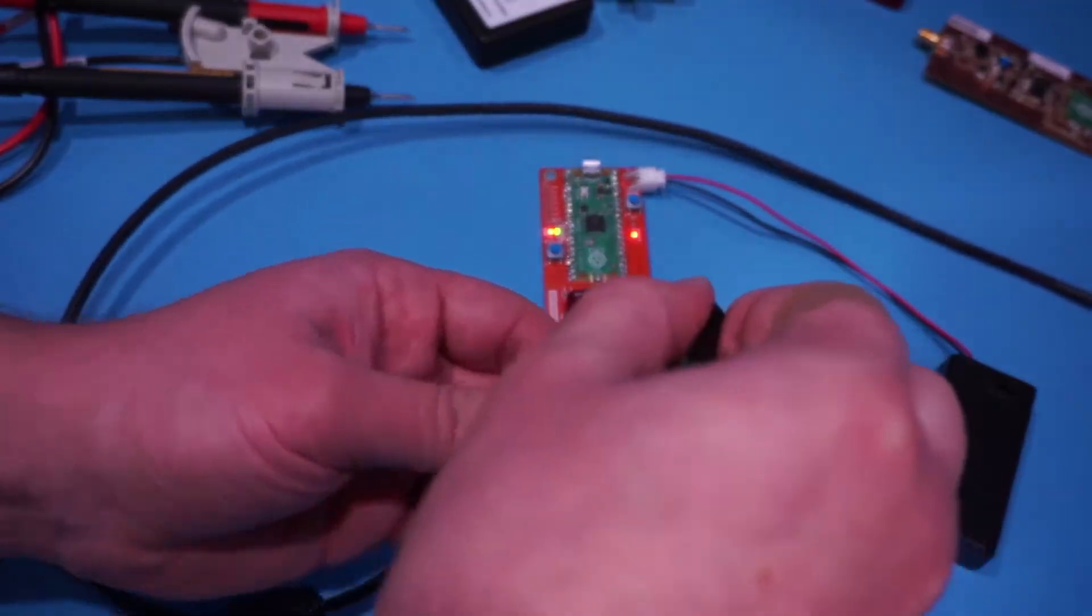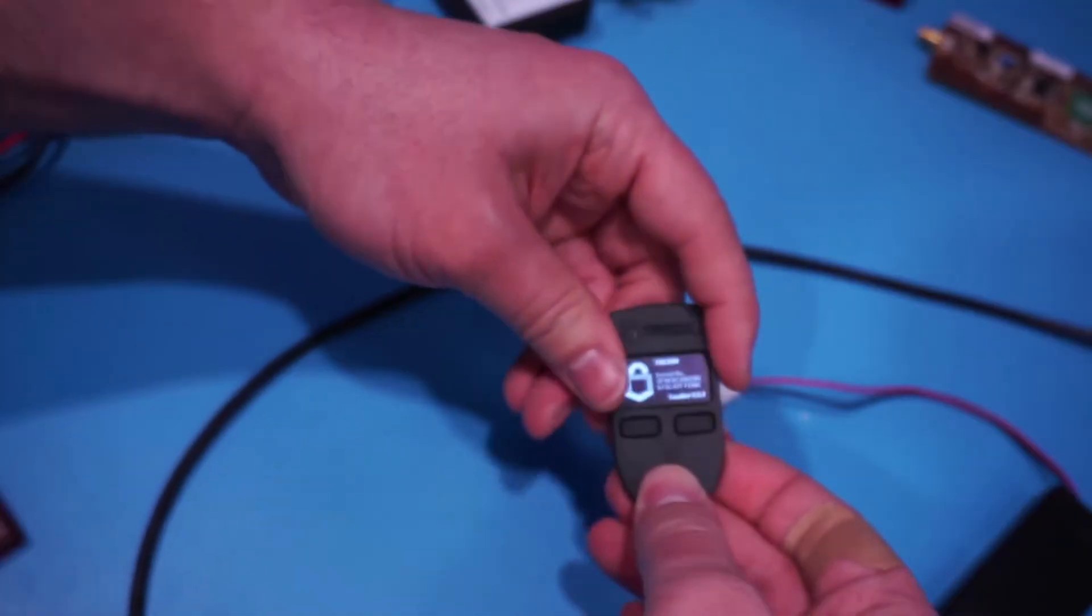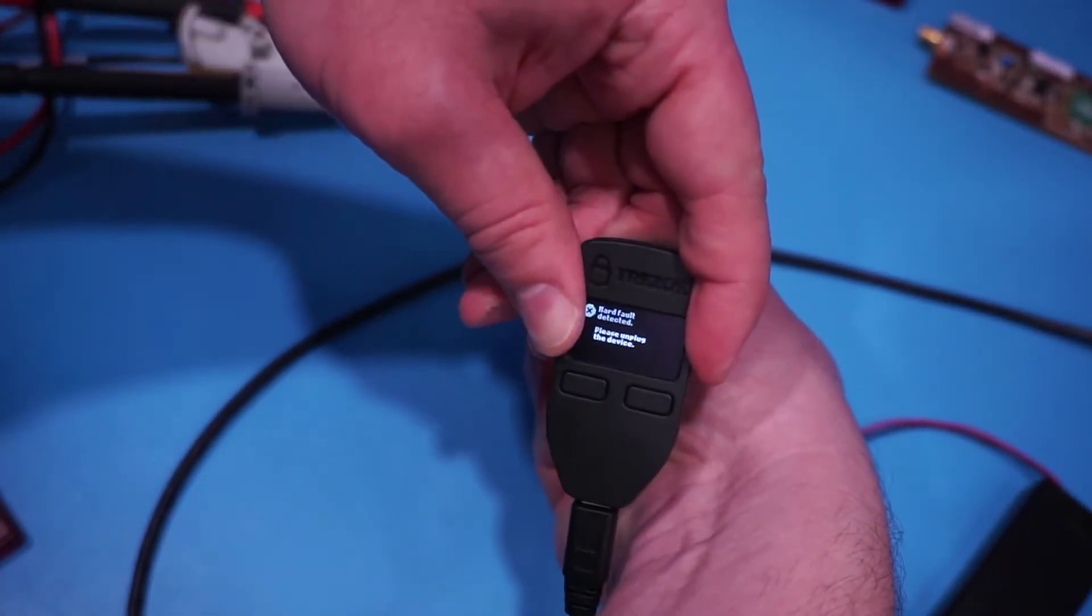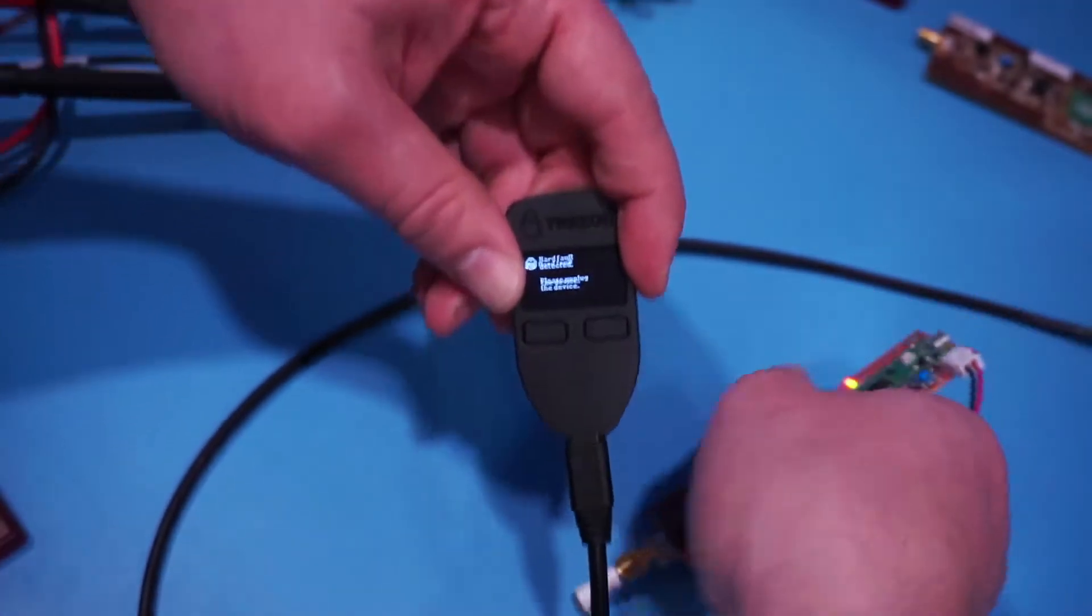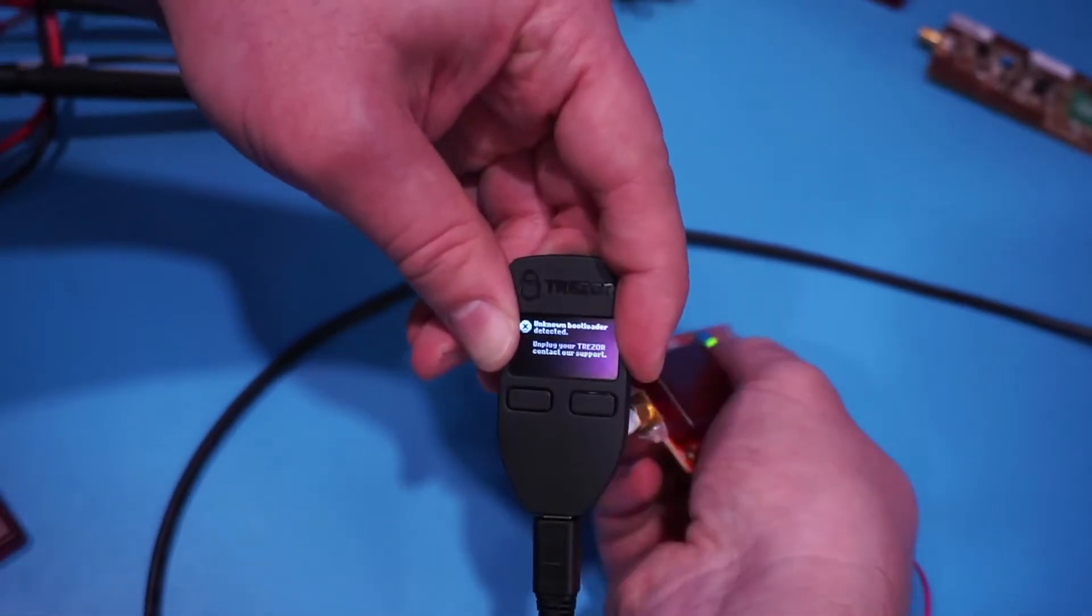So I'm going to use this Trezor Bitcoin wallet I've used in other examples. You can see the case is a bit open because I've been doing other stuff with it. And what you can see is that it'll show this hard fault detected message because it's actually detecting that a fault has been inserted. It's some of its protections that detect some of these weird faults.